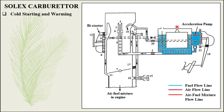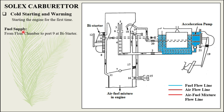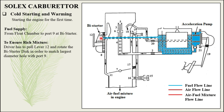The first circuit is cold starting and warm-up. This is the float chamber containing the fuel. This is the passage through which the fuel enters the float chamber from the fuel tank, and this is the air vent. Cold starting is the condition when you start the engine for the first time. Fuel flows from the float chamber to port 9 at the bias starter. To ensure a rich mixture, the driver has to pull lever 12 and rotate it to match the largest hole diameter of the disk with port number 9.